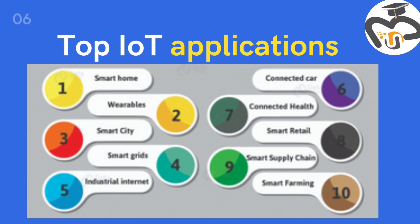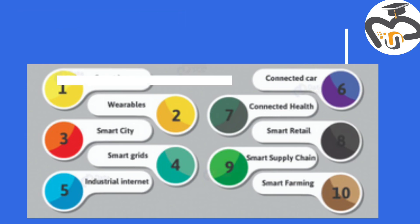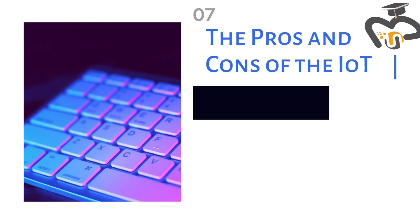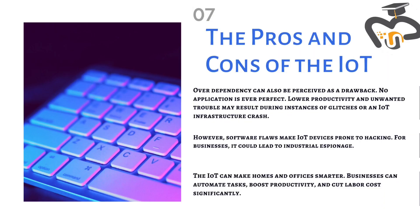Top IoT applications: one — smart home, two — wearables, three — smart city, four — smart grids, five — industrial internet, six — connected car, seven — connected health, eight — smart retail, nine — smart supply chain, and ten — farming.